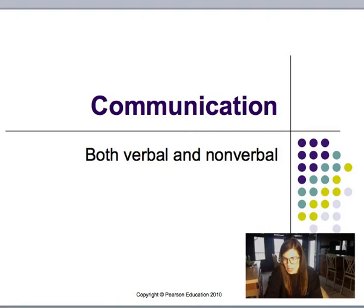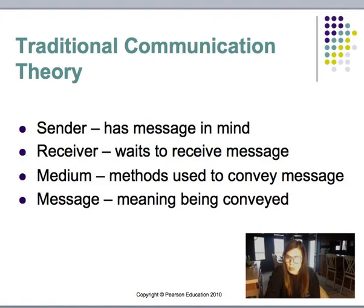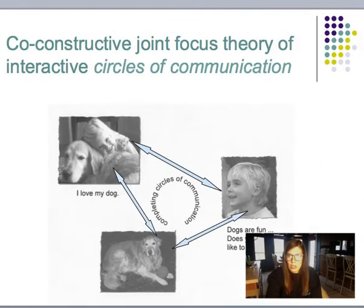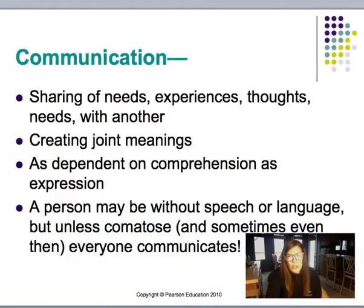Communication is both verbal and nonverbal. In the traditional communication theory, there are four components: the sender, the receiver, the medium, and the message. The tube theory of communication is an older model, representing information transfer. The co-constructive joint focus theory shows interactive circles of communication — everything is circular. Communication is the sharing of needs, experiences, and thoughts with another, creating joint meanings as dependent on comprehension as on expression. A person may be without speech or language, but unless comatose, everyone communicates.